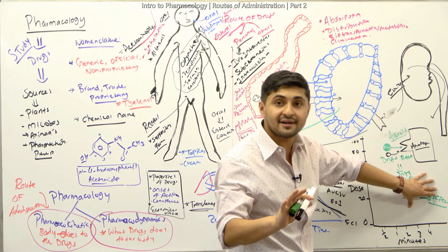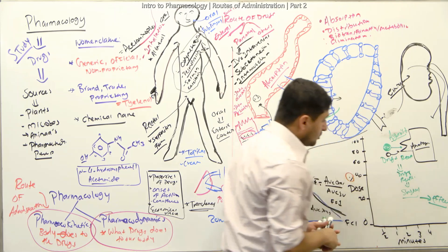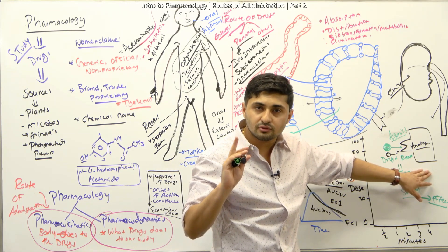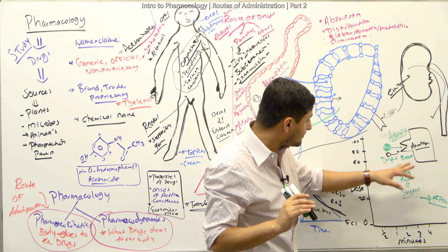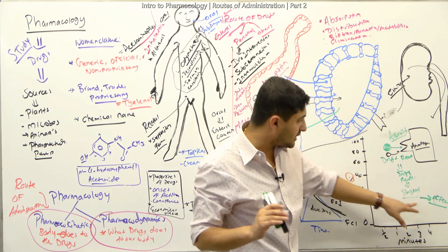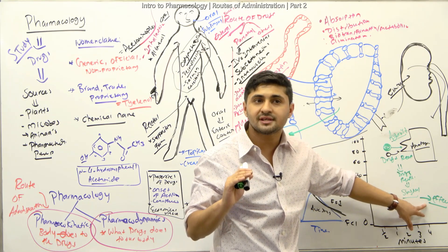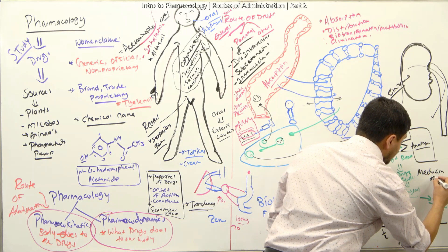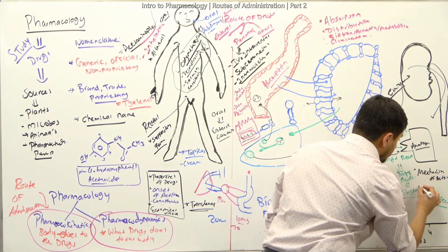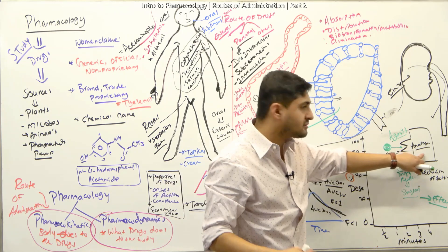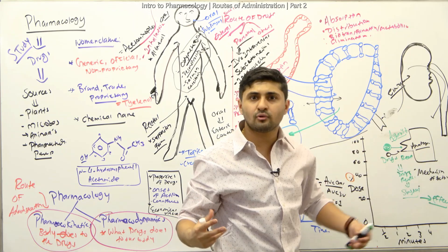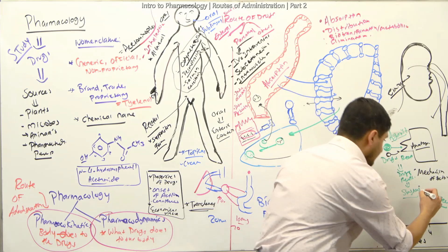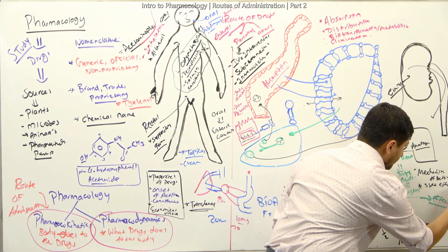This whole process — from receptor binding to signal transduction to physiological effect — is described in simpler terms as the mechanism of action. Based on the dose of the drug, it will activate channels and produce its intended effect. However, it can also produce adverse effects and side effects, which are very important to remember in pharmacology.